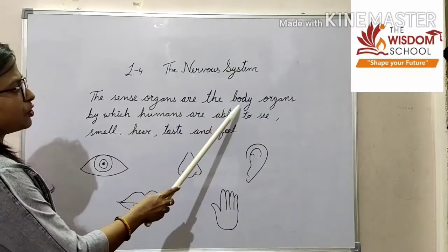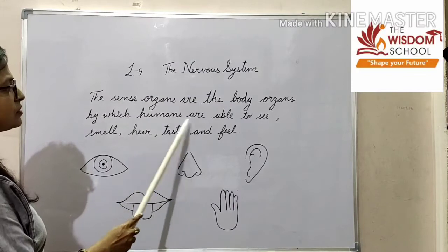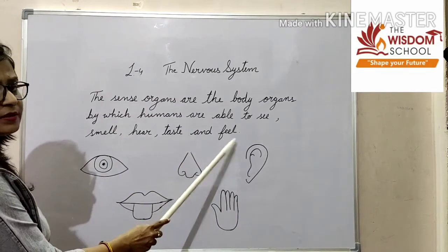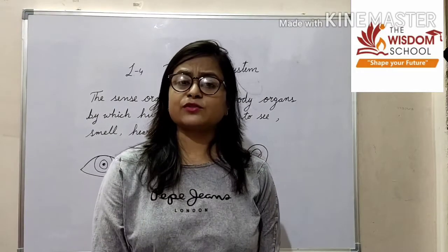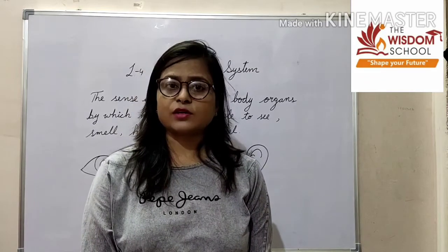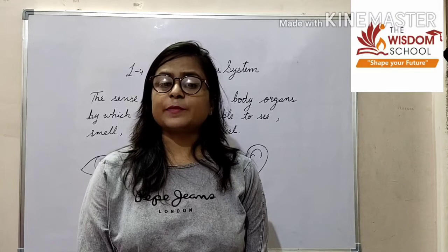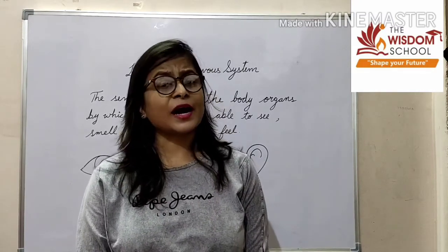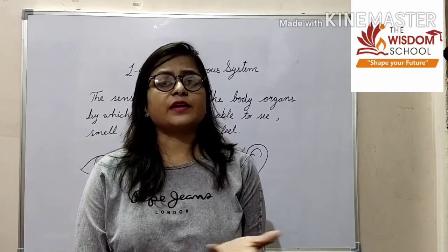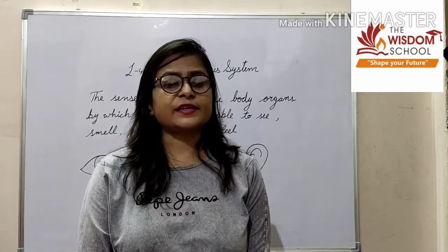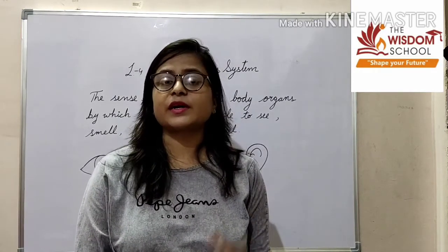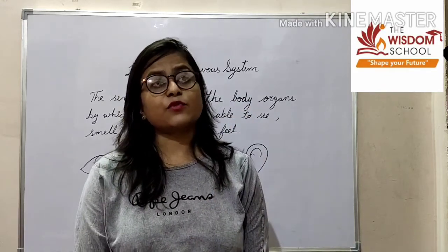You can do all of that just because of your senses. The sense organs are the body organs by which humans are able to see, smell, hear, taste, and feel. Today we are going to discuss about the sense organ: eyes. Eyes are the visual sensory organs of the human body. They help us see the world around us. They work like cameras and send images to the brain, which in return tells us what we have seen.